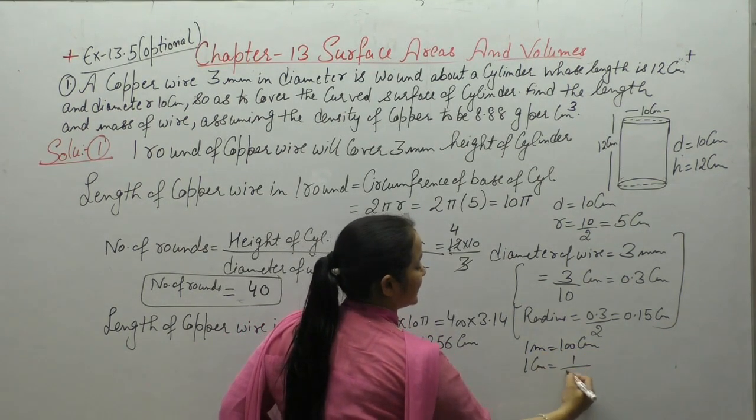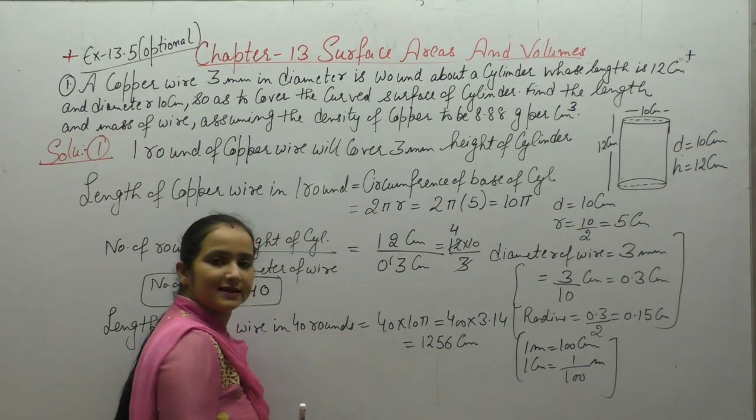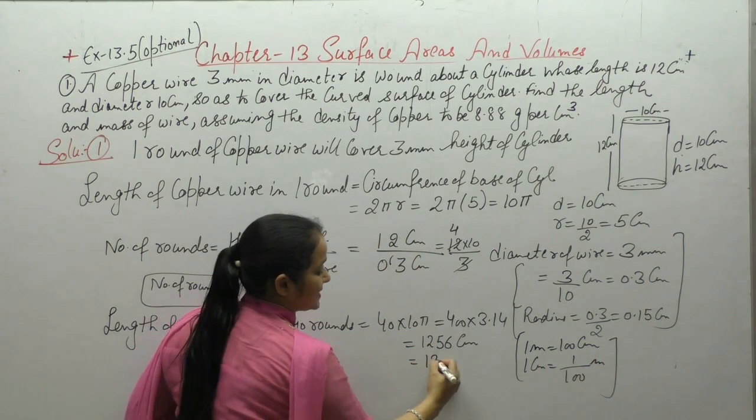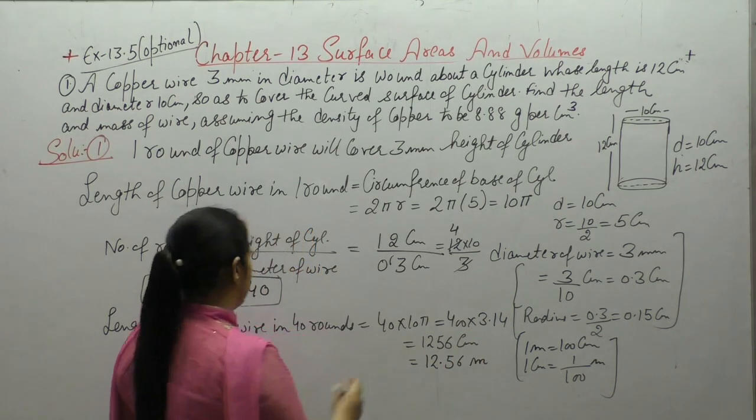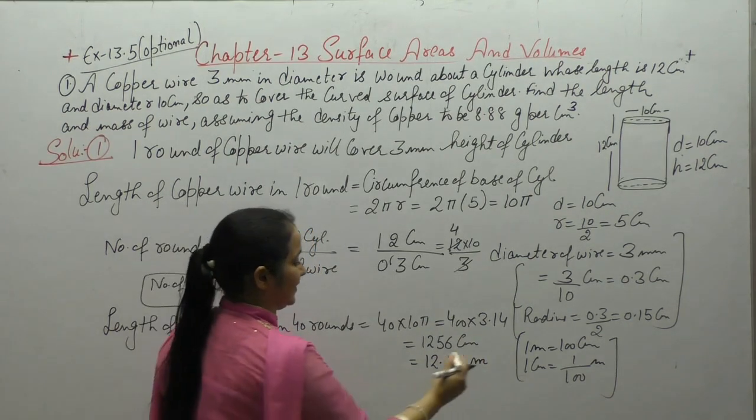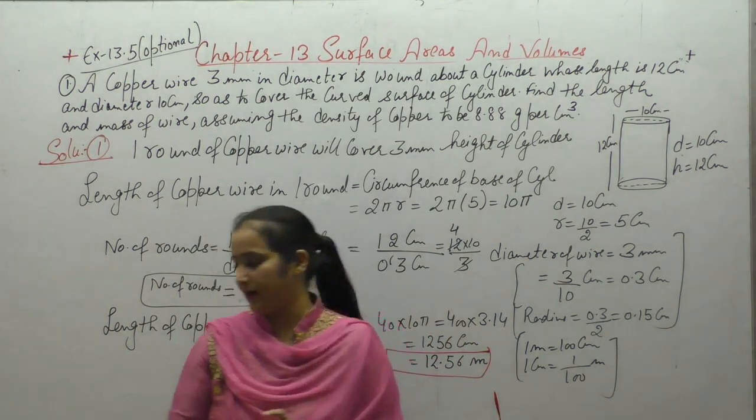And if we want to convert this to meters, we know 1 meter equals 100 centimeters. So 1 centimeter is 1/100 meter. It means we will divide by 100. So count two digits from behind the decimal. So 12.56 meters if we want to convert to meters. So we got the length of copper wire.